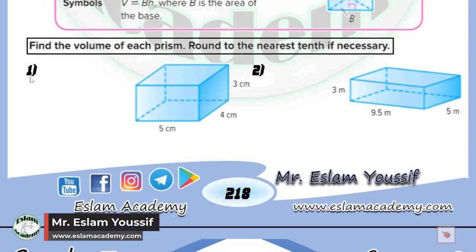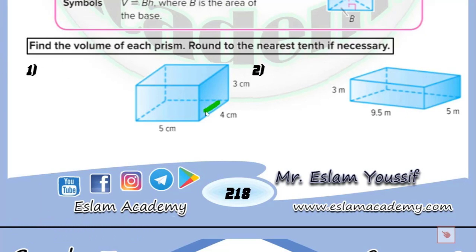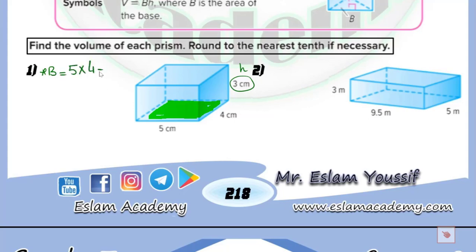In problem number 1, we need to find the volume of the rectangular prism. First, identify the base — it's a rectangle with dimensions 5 and 4, so the area of the base equals 5 times 4, which equals 20. Then the volume equals the area of the base multiplied by the height, which is 3. So 20 multiplied by 3 equals 60 cubic units.